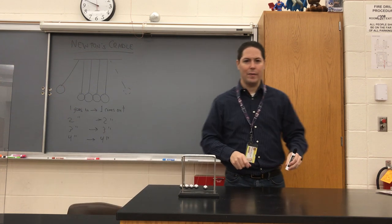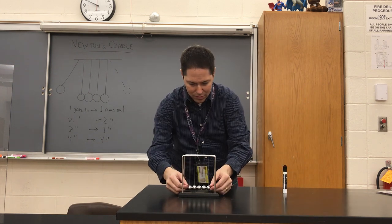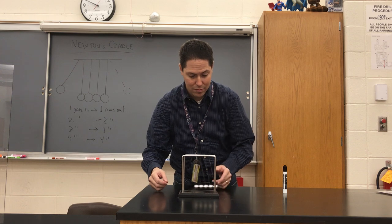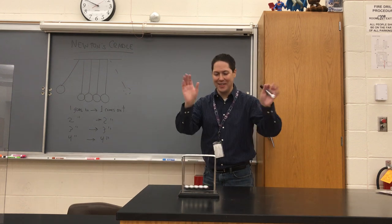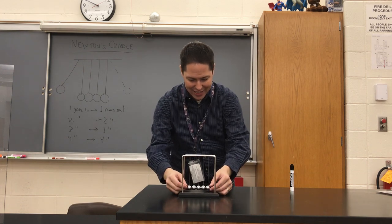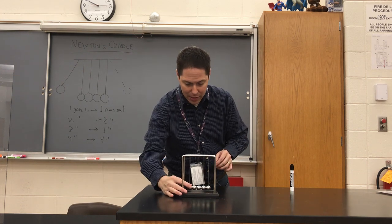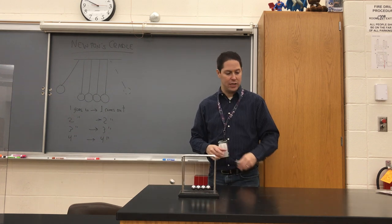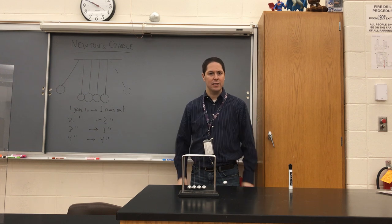Four go in, four come out. But what if it didn't happen? That would be pretty crazy, right? It's a bit of a trivial idea, but it happens every single time — one sphere comes in, one sphere goes out the other side. So the question is, how do we use our physics to explain this?